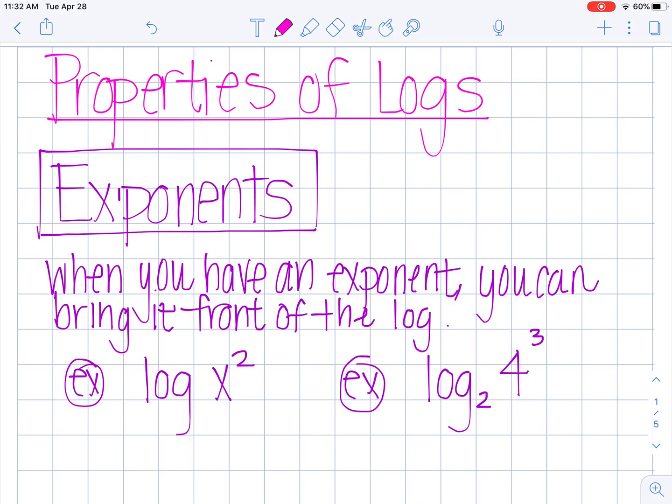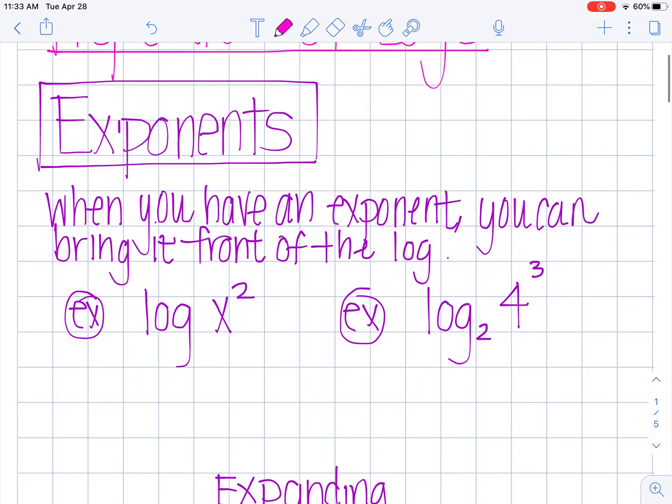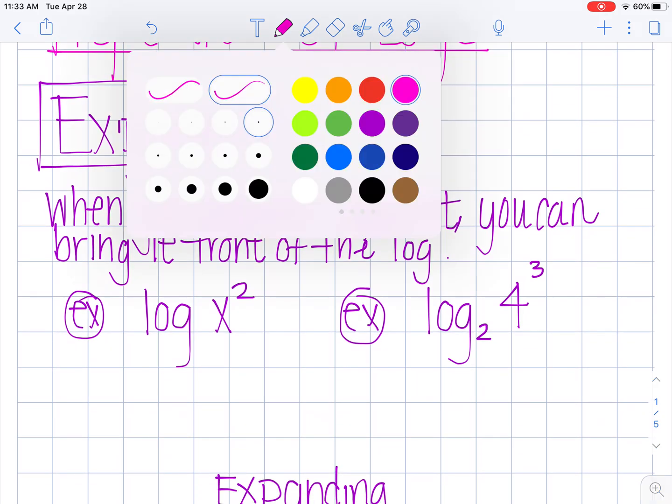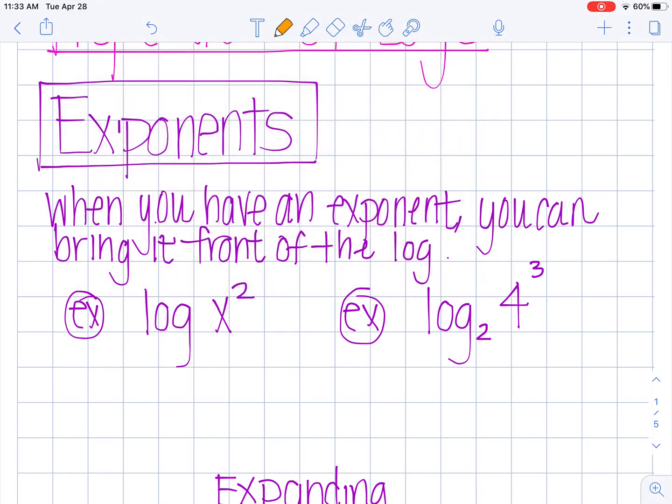The first property has to deal with exponents. When you have an exponent you can bring it in front of the logarithm. I have two examples written down for you. Let's do our work here in orange so it stands out. The rule says when you have an exponent here you're going to bring it down out in front of your logarithm. So log of x squared becomes two times the log of x.